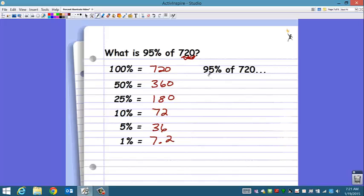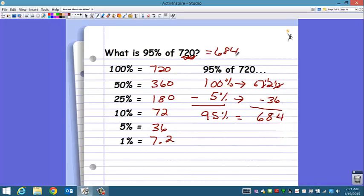Or you could do this. You could take your 100% and subtract the 5%. Because isn't 100 minus 5 95%? So let's do that. 100% is the 720, the 5% is 36, and subtract to find your 95%. So we have to borrow, 10 minus 6 is 4, borrow from here. This makes it 11 minus 3 is 8, this is a 6. So 95% of 720 equals 684.